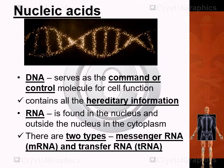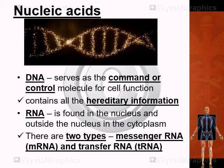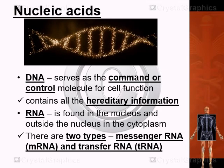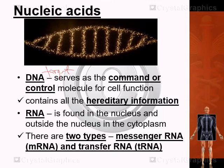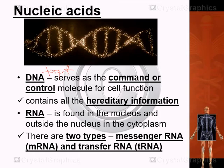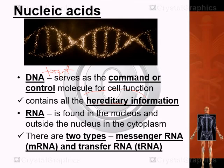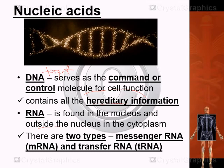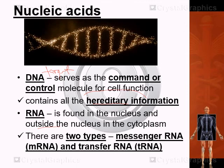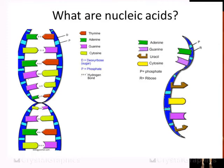Nucleic acids are mainly composed of DNA and RNA. DNA serves as the command and control molecule for cell function — the target molecule. It determines what the cell does and contains all hereditary information, the genes. RNA is found in the nucleus and also outside it in the cytoplasm. There are two main types of RNA: messenger RNA and transfer RNA.